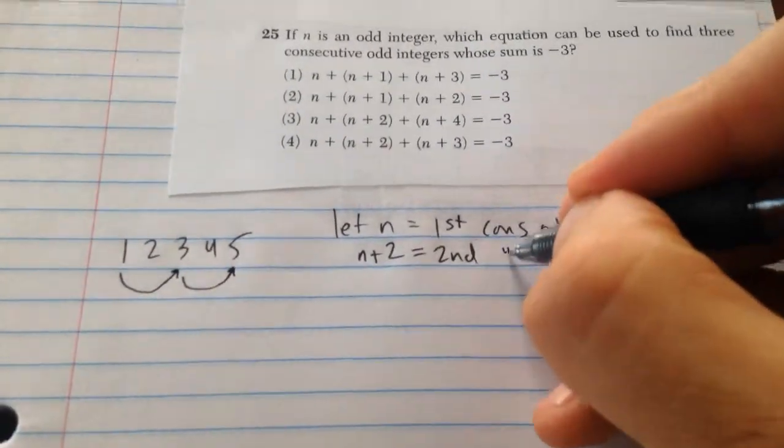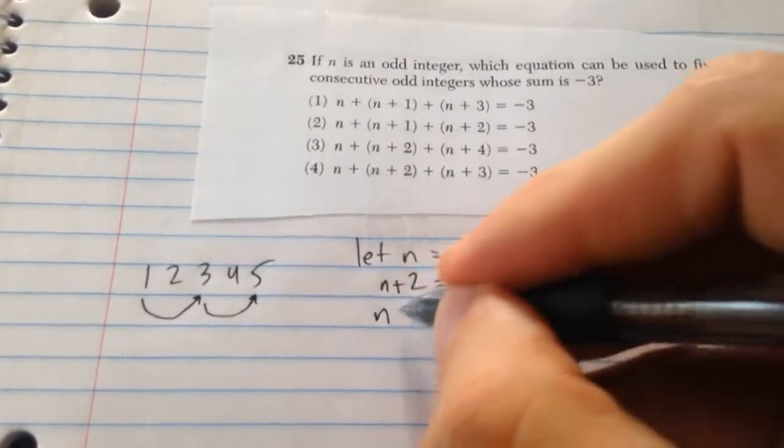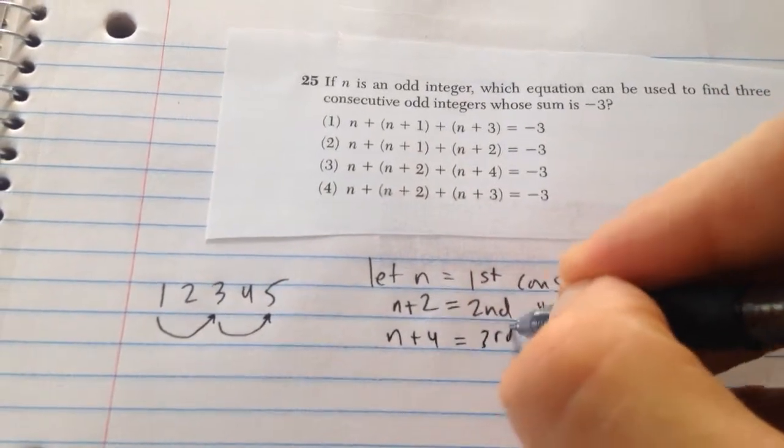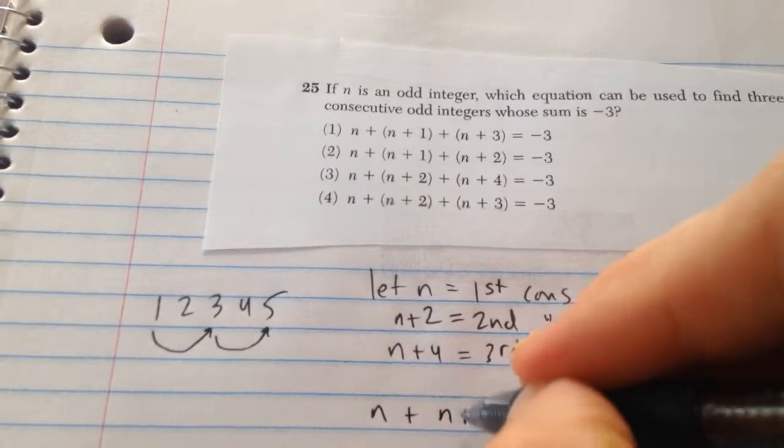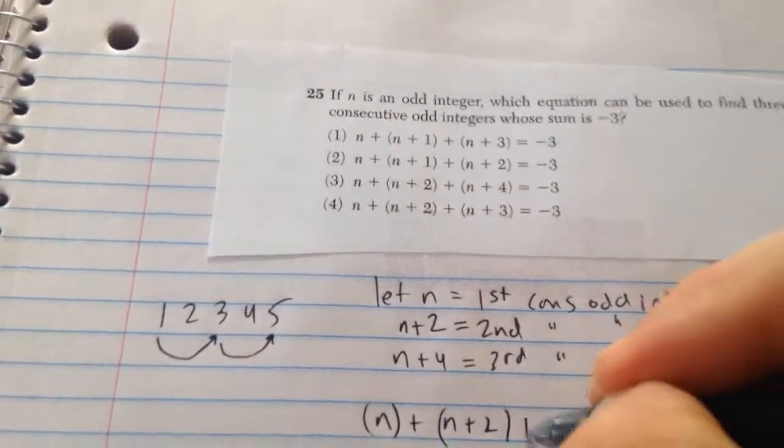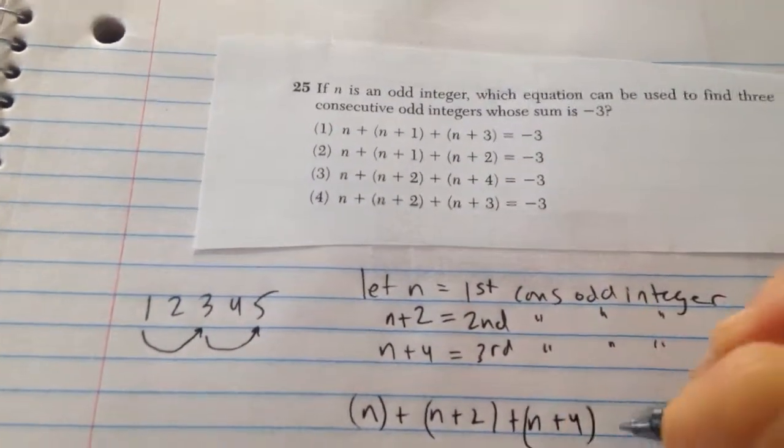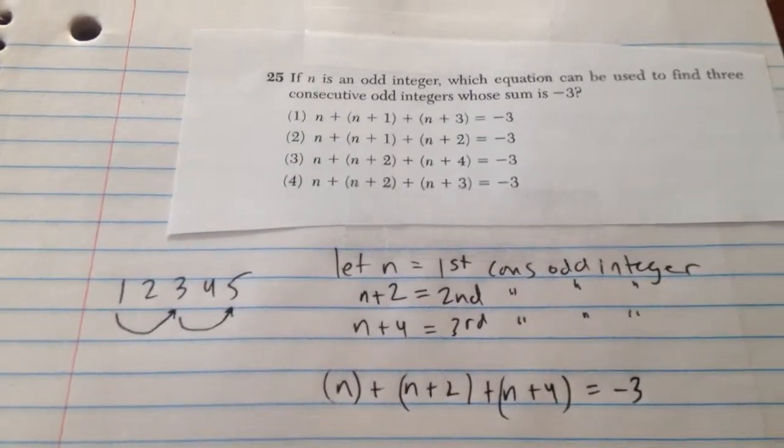Consecutive odd integer, and the next one is n plus 4 for the third consecutive odd integer. So we're going to say n plus n plus 2 plus n plus 4 equals negative 3.